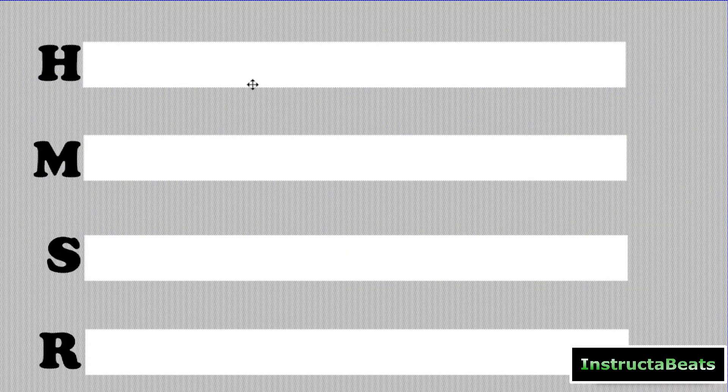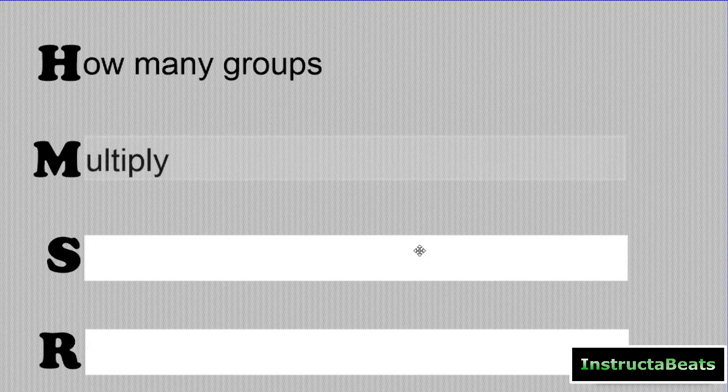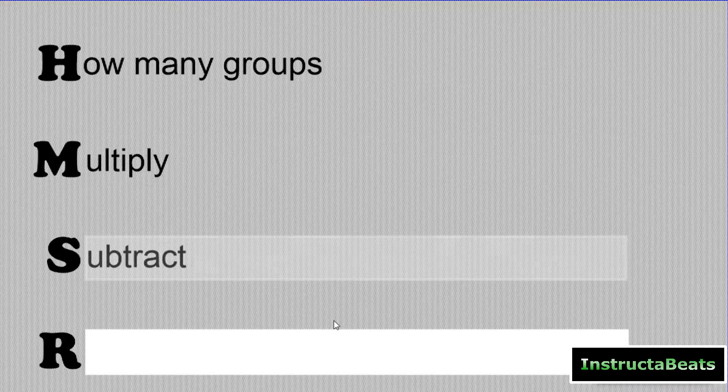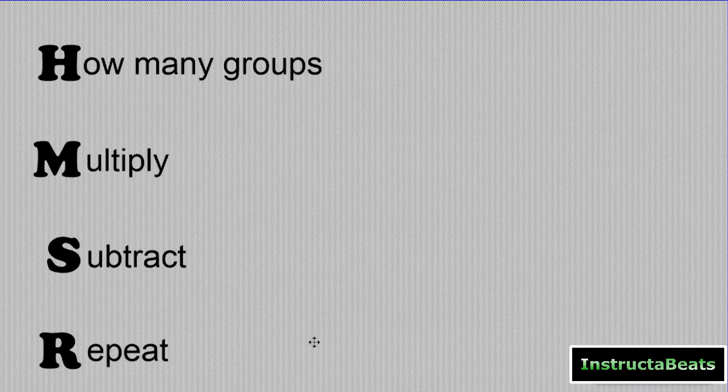All right, let's get into HMSR. H is our first question we're going to ask ourselves: How many groups? M, we're going to multiply. S means we are going to subtract. And R means we are going to repeat it until we get a number when we subtract that is less than our divisor.